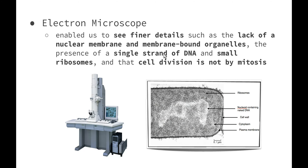The electron microscope then in the 1930s enabled us to see the finer details within the cell, such as the lack of a nuclear membrane and any other membrane-bound organelles. We also could see that the presence of a single-strand DNA and small ribosomes existed, rather than the complex DNA within the nucleus that we see in our eukaryotes. We could also see that cell division does not take place by mitosis, but through the process of binary fission.